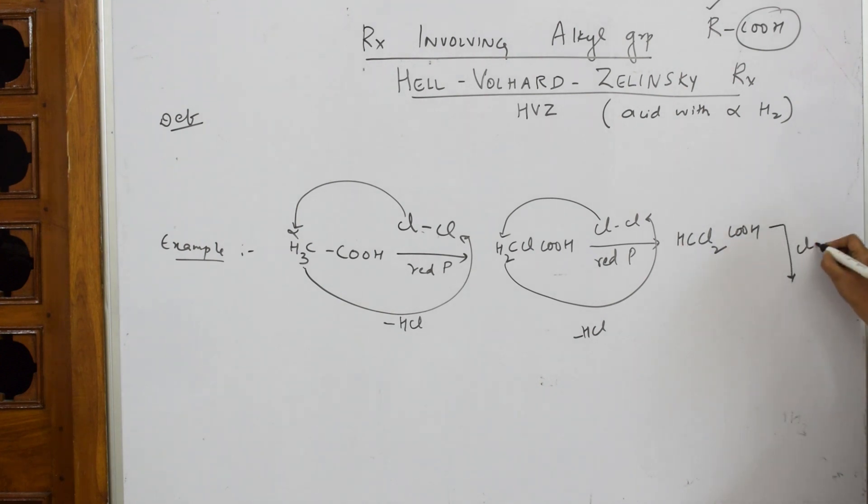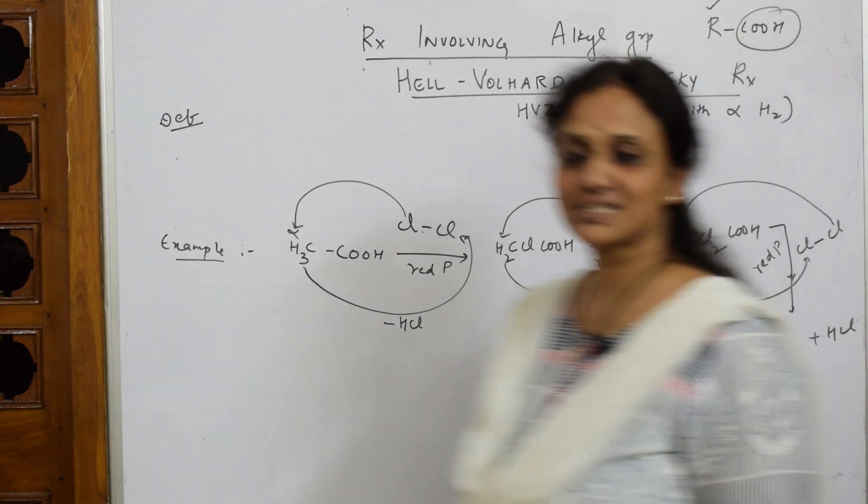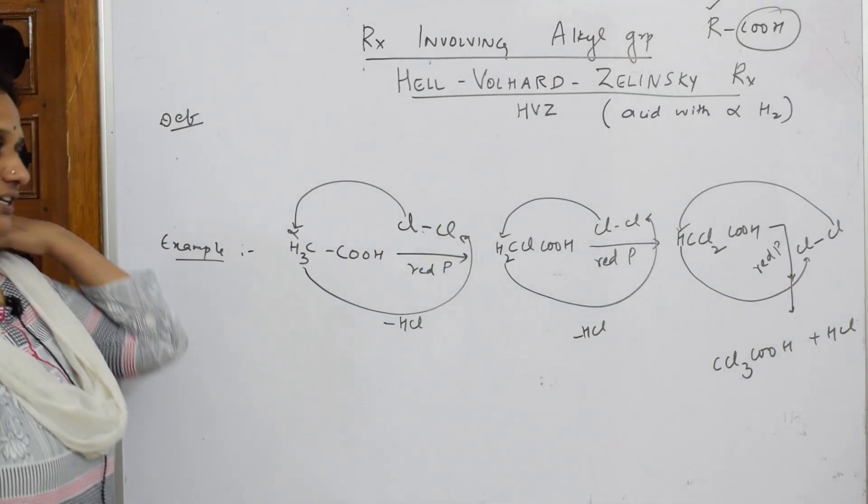Now still there is one alpha hydrogen. I'm going to again treat it with chlorine in the presence of red phosphorus. Now what happens? This chlorine is going in, replacing this hydrogen, and that hydrogen will come out with this chlorine. What do I get now? All the hydrogens have gone - CCl3COOH and HCl. That's it.